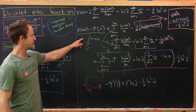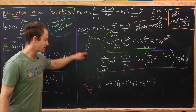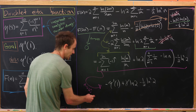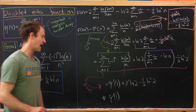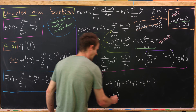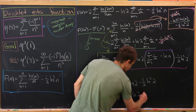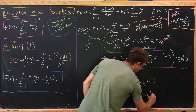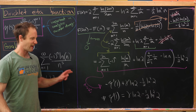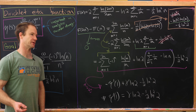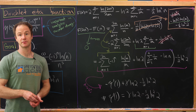Since we also know the limit is 0, we get 0 equals minus eta prime of 1 plus gamma times natural log of 2 minus 1 half natural log squared of 2, allowing us to solve: eta prime of 1 equals gamma times natural log of 2 minus 1 half natural log squared of 2. And that's the famous value of the derivative of the eta function at 1.